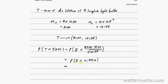This is phi of 0.994, which gives us from the tables 0.840 to 3 significant figures. So that's the answer.